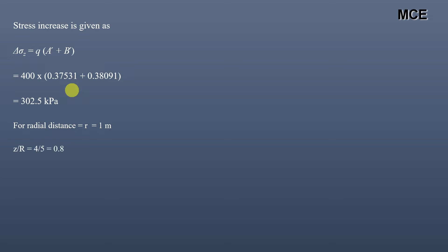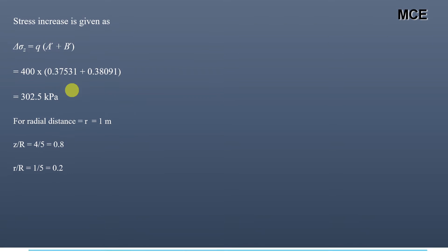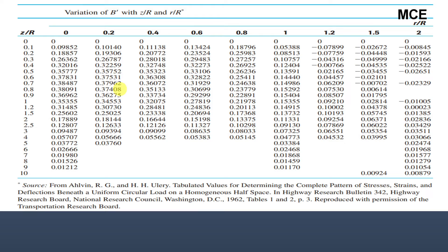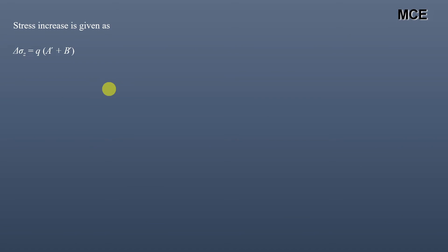For the next radial distance of 1 meter, Z/R remains 0.8 and r/R equals 1/5 equals 0.2. From the table, for Z/R equals 0.8 and r/R equals 0.2, the value of A prime is 0.36832 and the value of B prime is 0.37408. The stress increase is Q multiplied by (A prime plus B prime), which equals 400 multiplied by (0.36832 plus 0.37408), equaling 296.96 kilopascal.